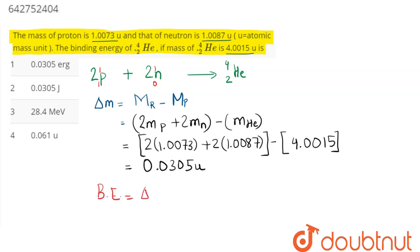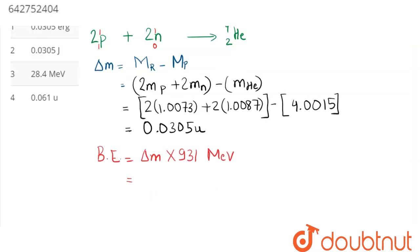be given as mass defect, if calculated in amu, multiplied by 931, comes in mega electron volt. So mass defect is 0.0305 amu into 931.